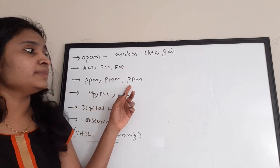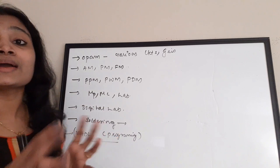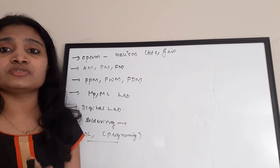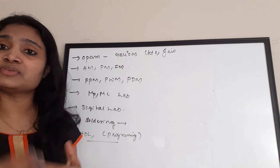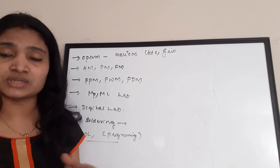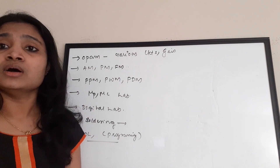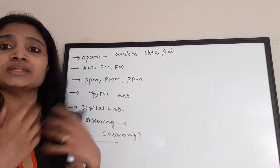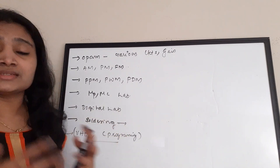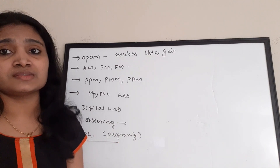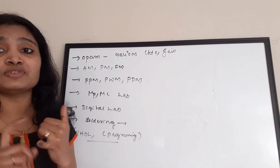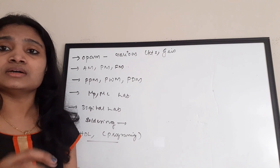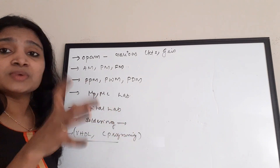Communication lab experiments are very important: AM, FM, PM modulation, PPM, PWM, PDM, QPSK, ASK — all these are important for the communication lab. Another very important area is microprocessor and microcontroller lab — for example, with 8051, you need to demonstrate 8-bit or 16-bit addition, subtraction, and other operations: how to give inputs and take outputs. Digital lab is also very vast and important.